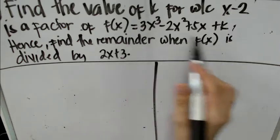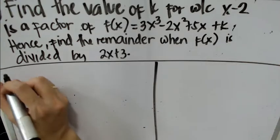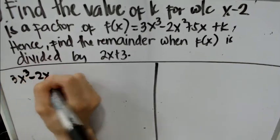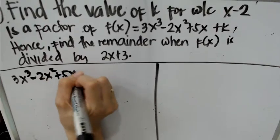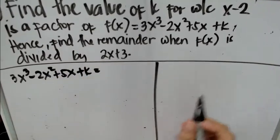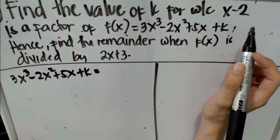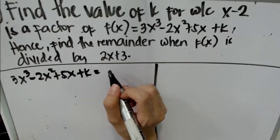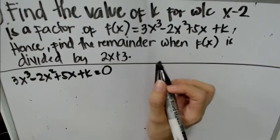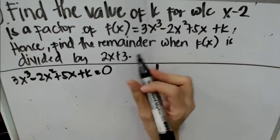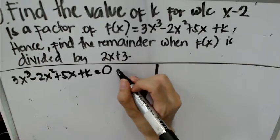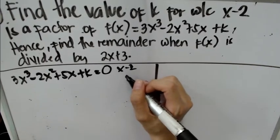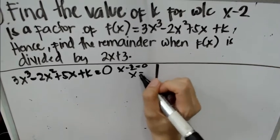First thing we do is to copy the given polynomial: 3x cubed minus 2x squared plus 5x plus k. The factor is x minus 2. According to the factor theorem, the given equation must be equal to 0 when divided by its factor. We equate x minus 2 to 0, so the value of x will be 2.